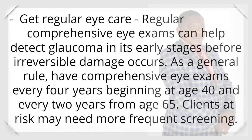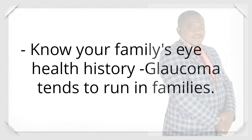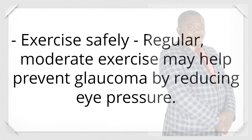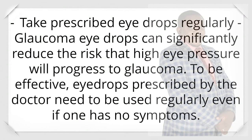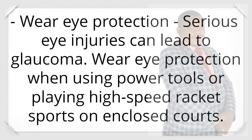Get regular eye care: regular comprehensive eye exams can help detect glaucoma in its early stages before irreversible damage occurs. As a general rule, have comprehensive eye exams every four years beginning at age 40, and every two years from age 65. Clients at risk may need more frequent screening. Know your family's eye health history, as glaucoma tends to run in families. Exercise safely: regular moderate exercise may help prevent glaucoma by reducing eye pressure. Take prescribed eye drops regularly, as they can significantly reduce the risk that high eye pressure will progress to glaucoma — they need to be used regularly even if one has no symptoms. Wear eye protection: serious eye injuries can lead to glaucoma; wear eye protection when using power tools or playing high-speed racket sports on enclosed courts.